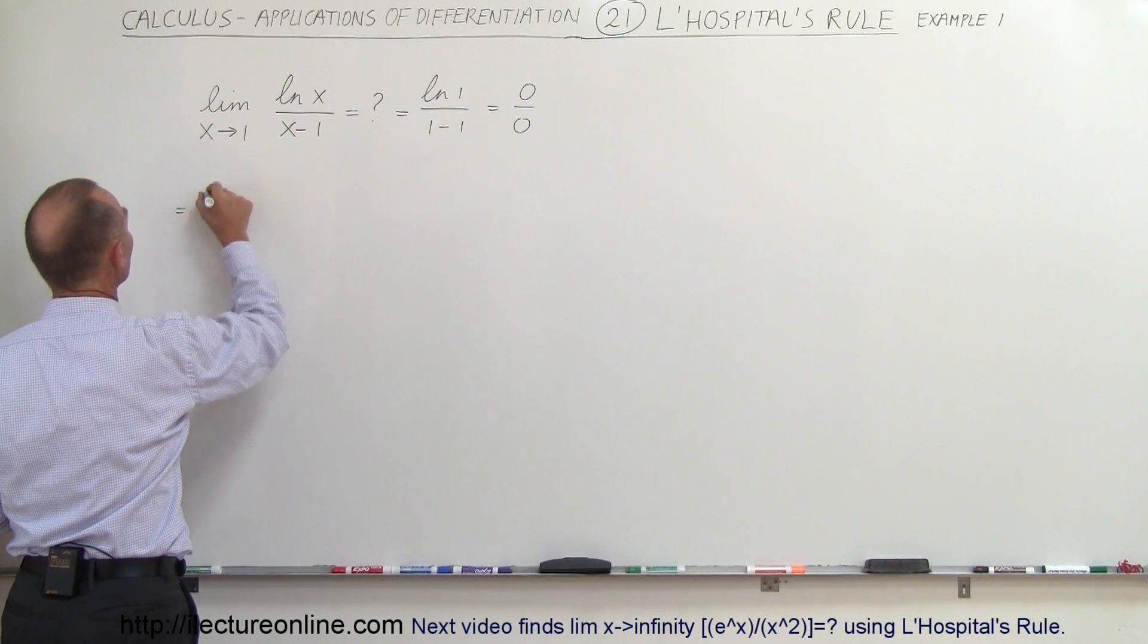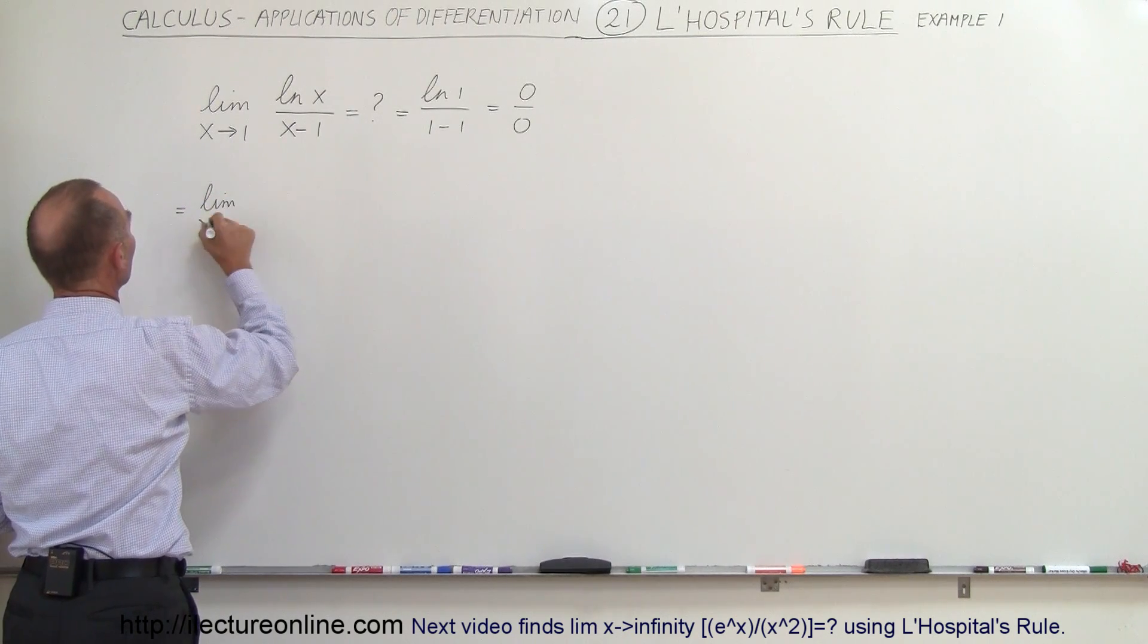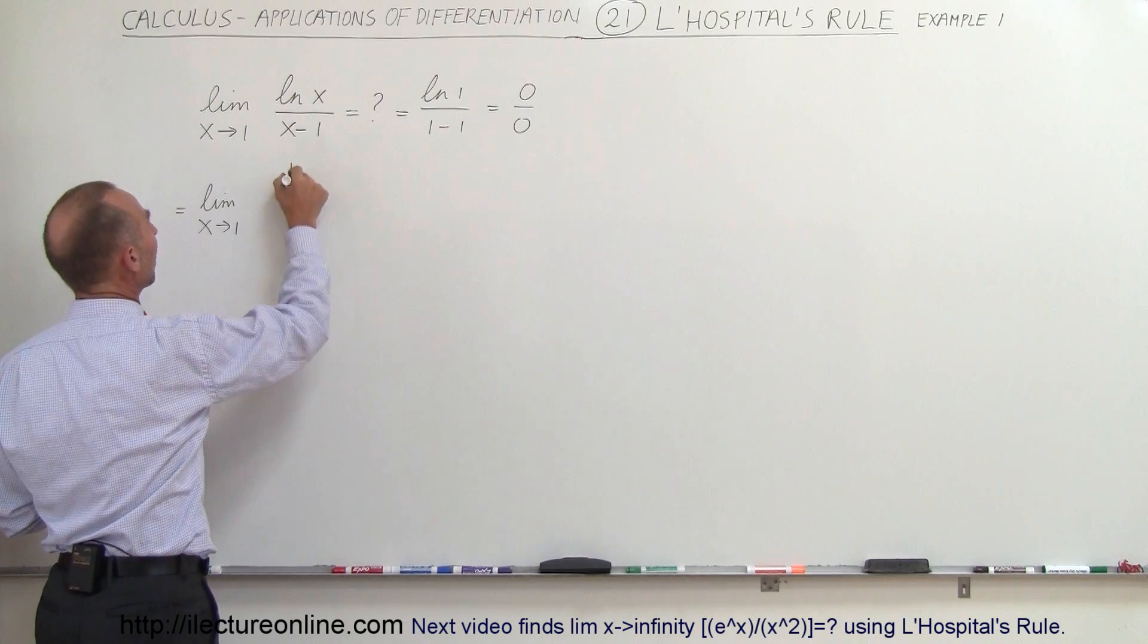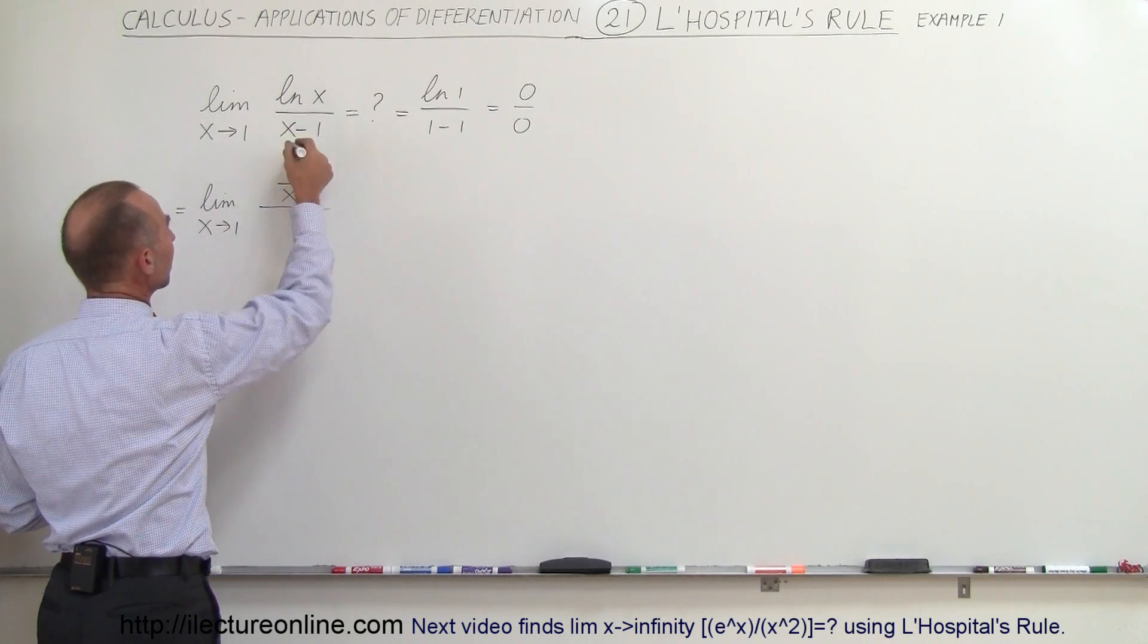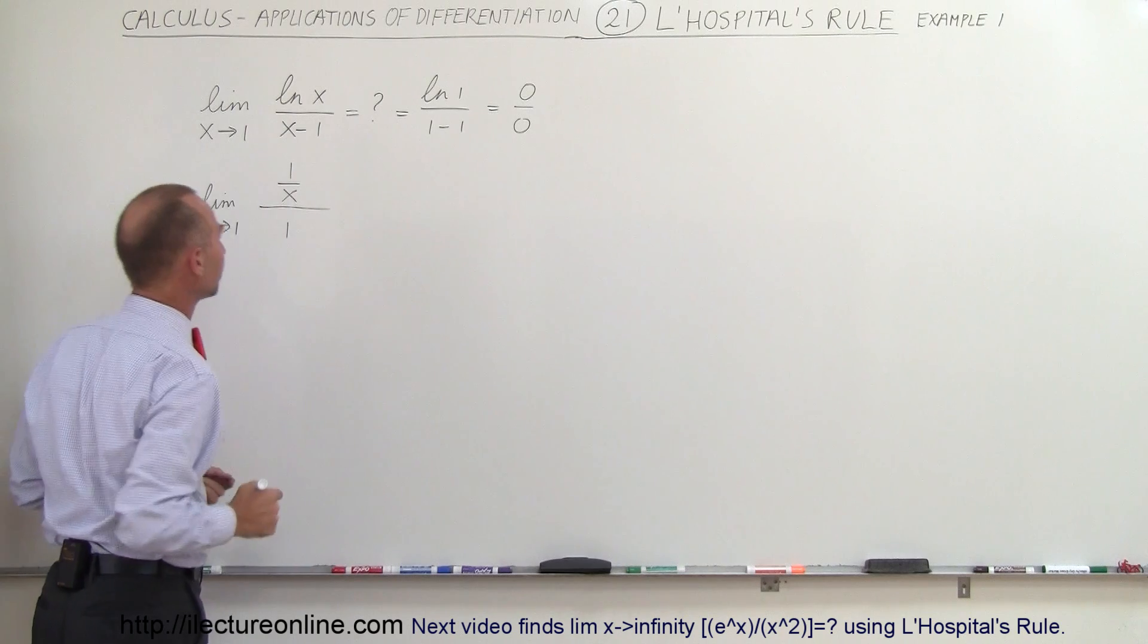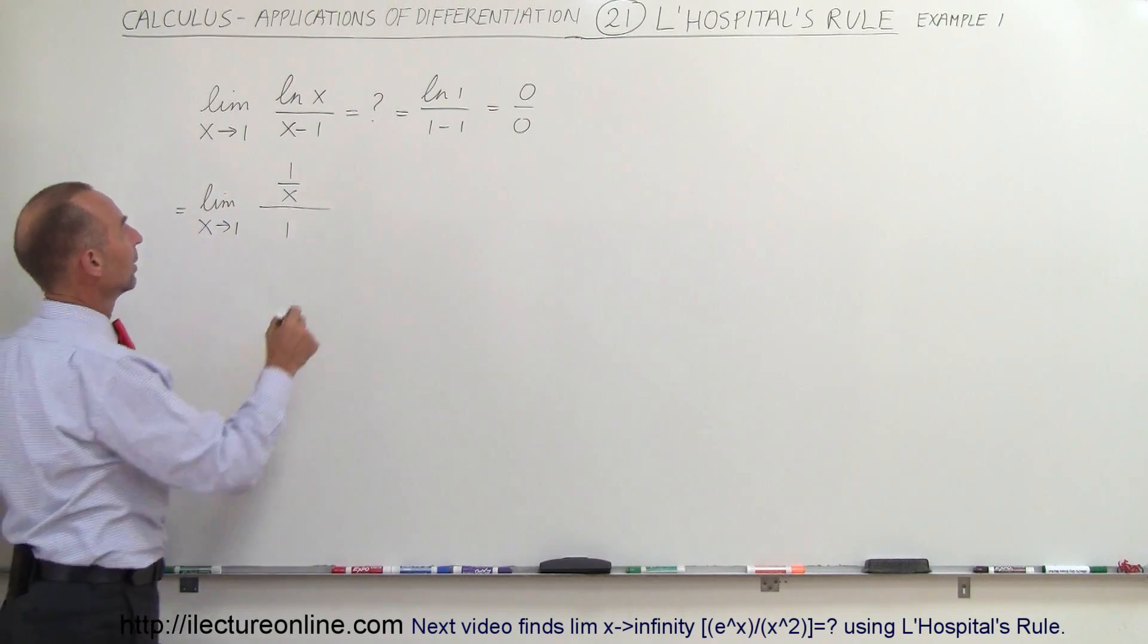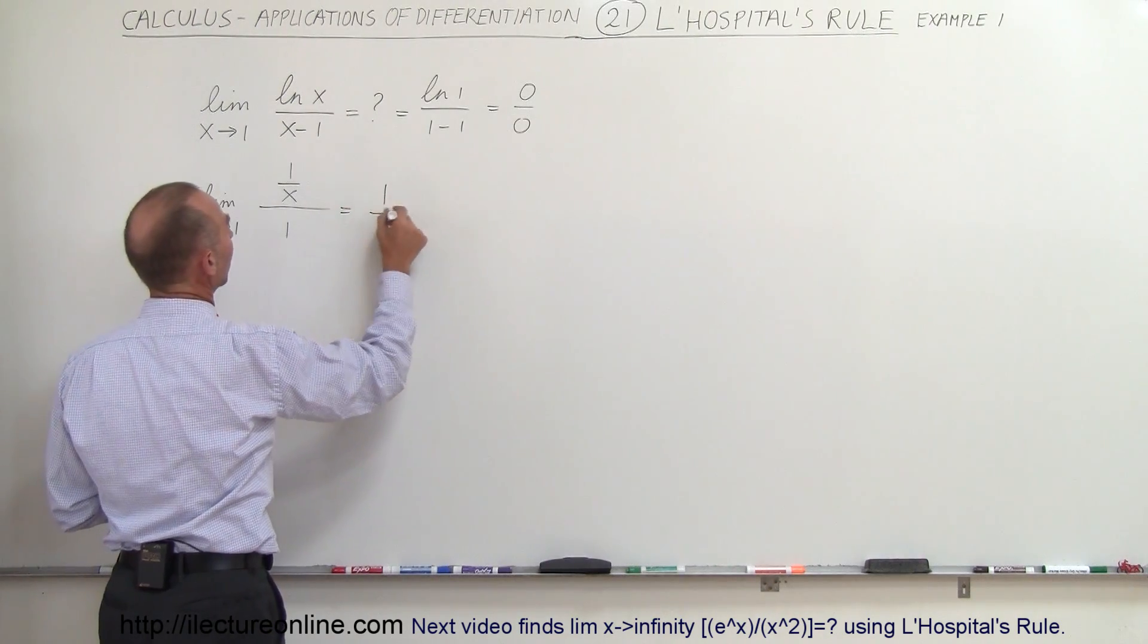So we're going to say this is equal to the limit as x approaches 1 of the derivative of the numerator which is equal to 1 over x divided by the derivative of the denominator which is 1. So 1 divided by x divided by 1, well that would be equal to 1 over x.